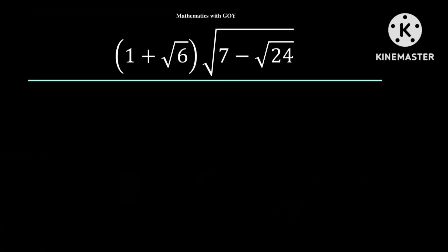Hello everyone. In today's lesson, we are going to be simplifying this radical expression without using a calculator. And to simplify this expression, we are going to use a very simple method. Let's take root 6 to be equal to x. And this implies that 6 is equal to x squared.